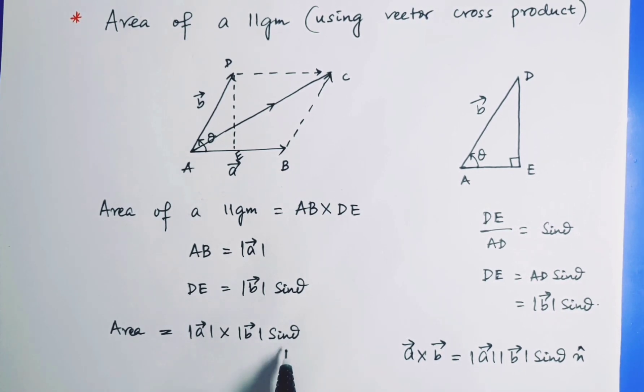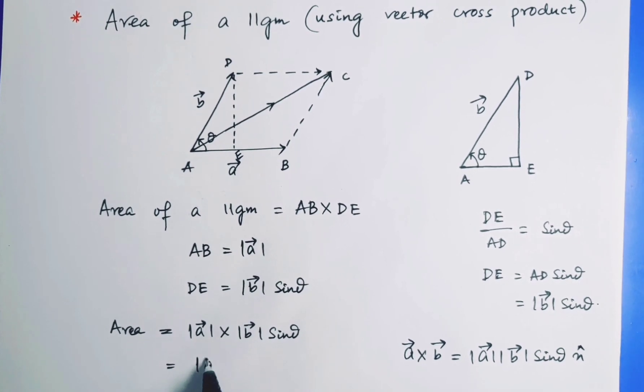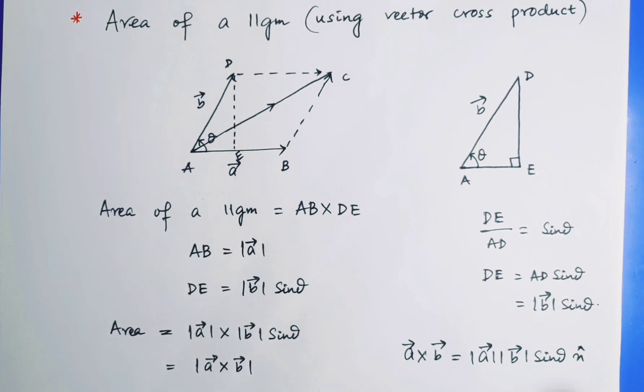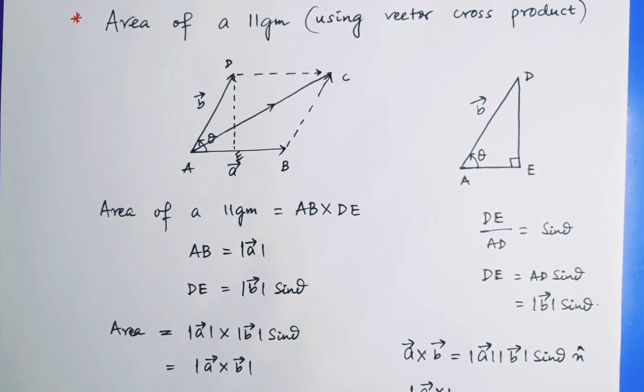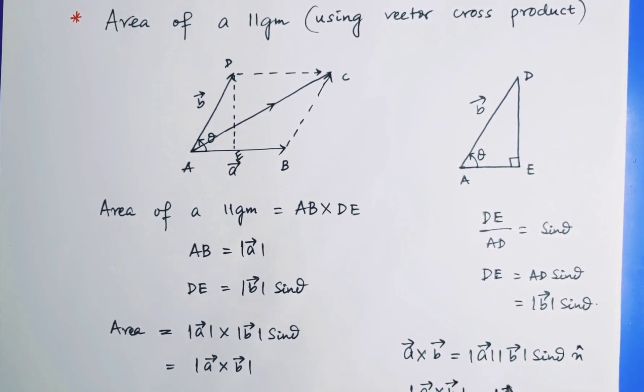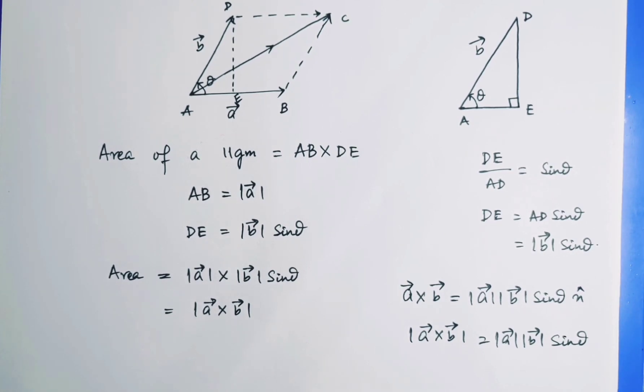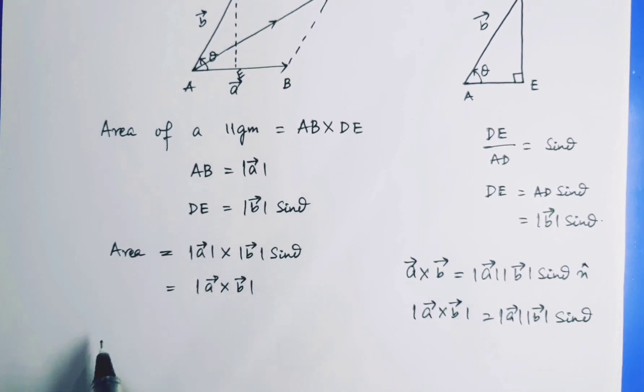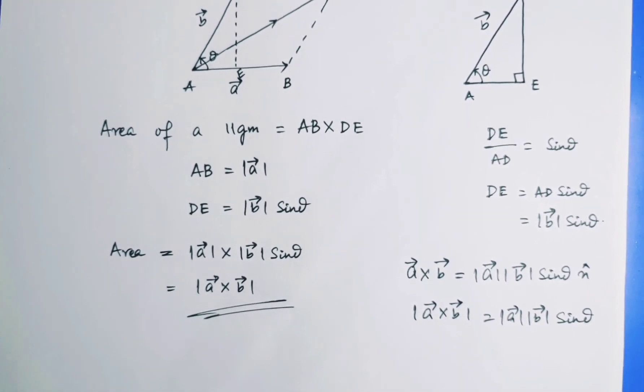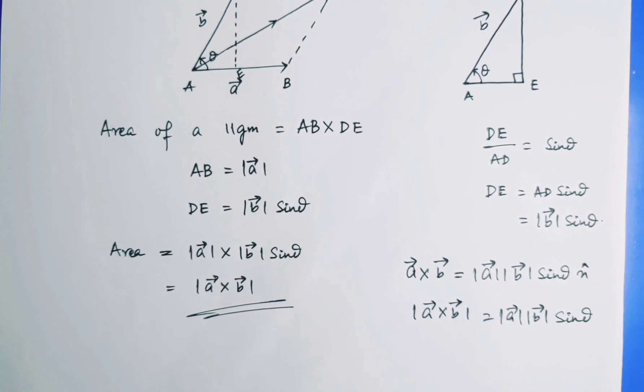So this is |A| |B| sine theta. Can I write this one as the magnitude of the cross product? There is no direction in here, so it will be just the magnitude of the cross product. So I will write this as |A × B| equals |A| |B| sine theta. No directions. So what do we see? The area of parallelogram is given by |A × B|. So this is our answer. Understood?